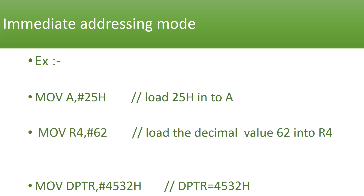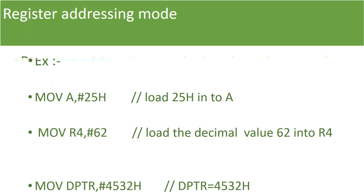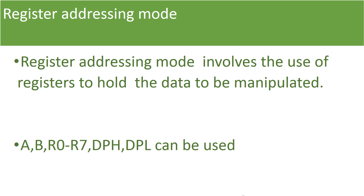For example, the instruction 'MOV DPTR, #4532H' — the value 4532H is the data we can move into DPTR. DPTR is a 16-bit register, so we can move 16-bit data into it. This is the immediate addressing mode, and next is the register addressing mode.